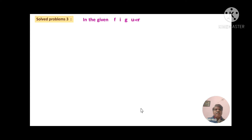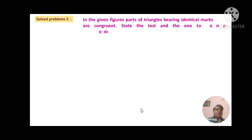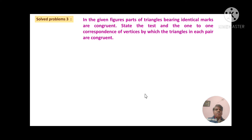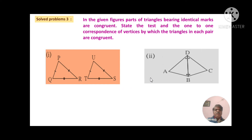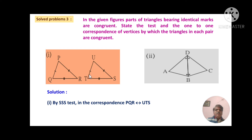Problem number three: in the given figure, parts of the triangles bearing identical marks are congruent. State the test and the one-to-one correspondence of vertices by which the triangles in each pair are congruent. For the first pair, PR is congruent with UT, QR is congruent with TS, and PQ is congruent with US by identical marks. All three corresponding sides are congruent. Therefore by the SSS test, triangle PQR is congruent with triangle UTS in the correspondence P, Q, R to U, T, S.